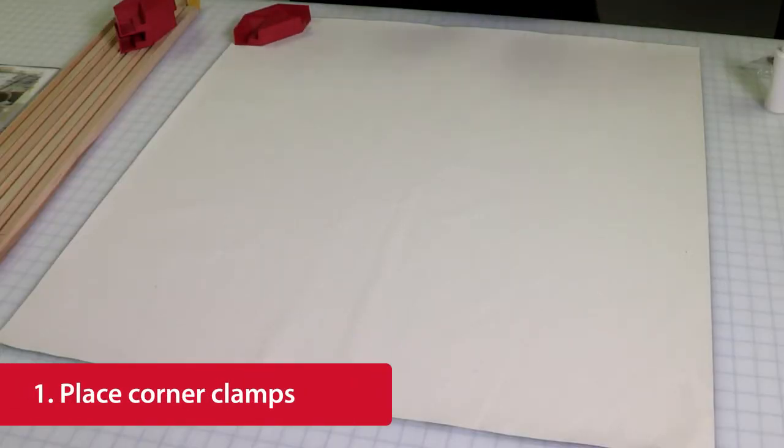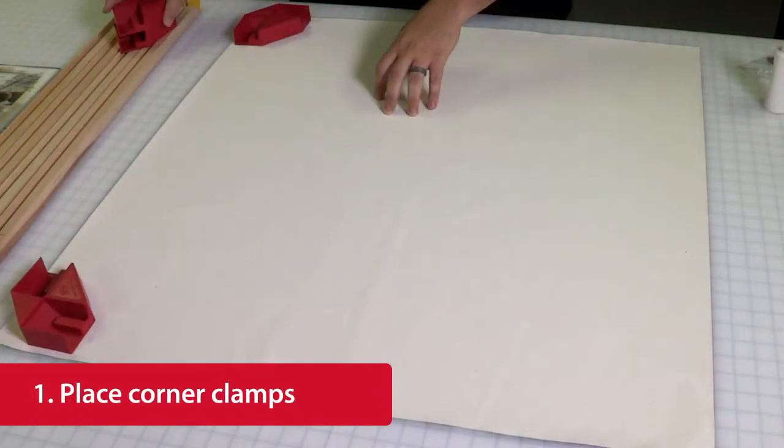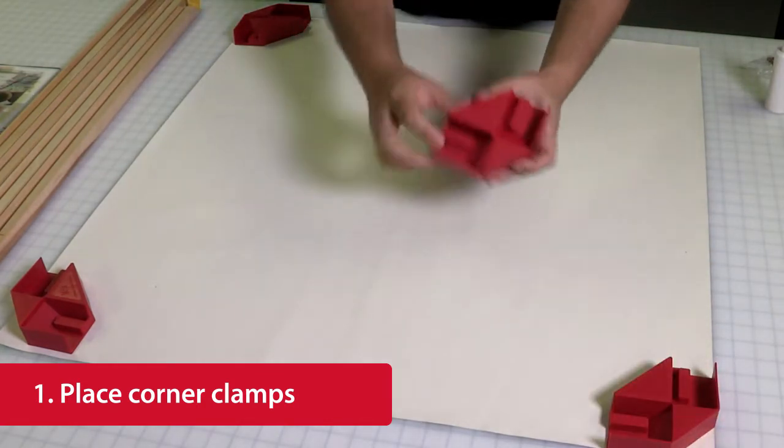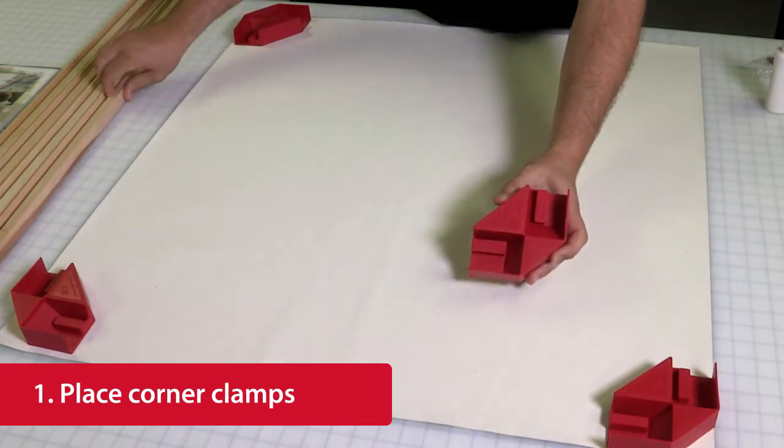Begin by placing your corner clamps in each of the four corners of your print with the image side down. Each corner clamp has a specific groove that the groove on the stretcher bar will fit into.